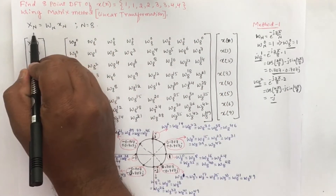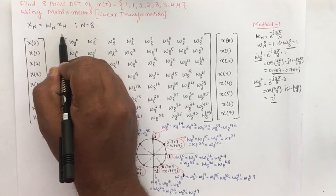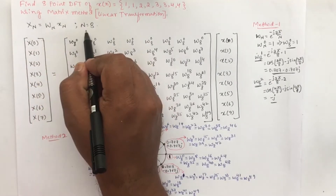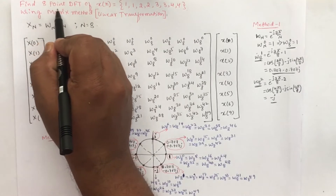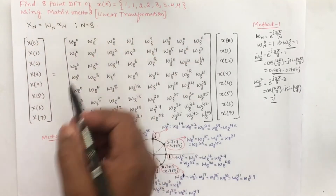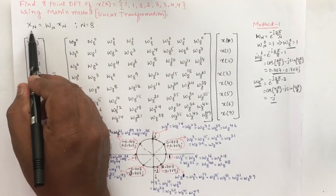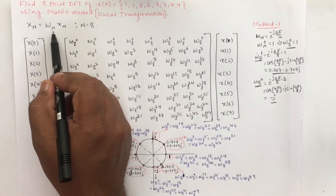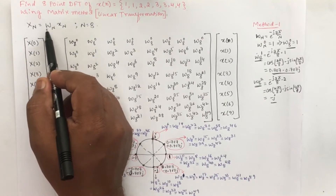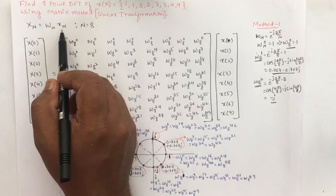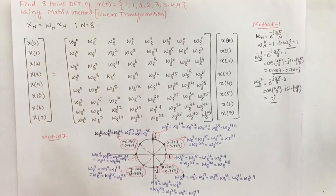We know X[N] is equal to W[N] into x[n]. Here N is equal to 8 because they are asking us to find 8-point DFT. For this, we need to write an 8×1 matrix for X[N], an 8×8 matrix for W[N], and an 8×1 matrix for small x[n].